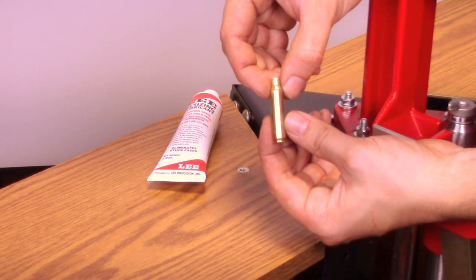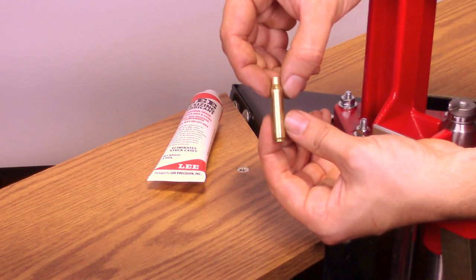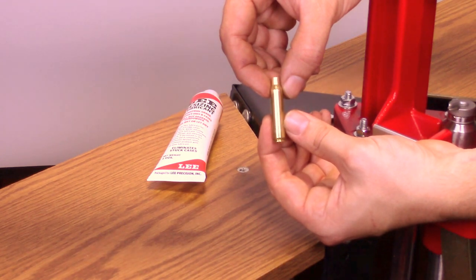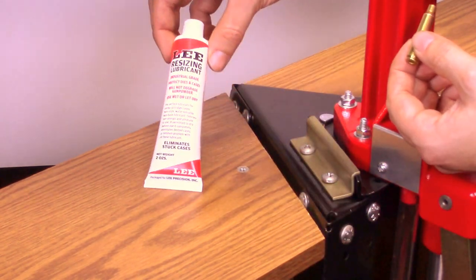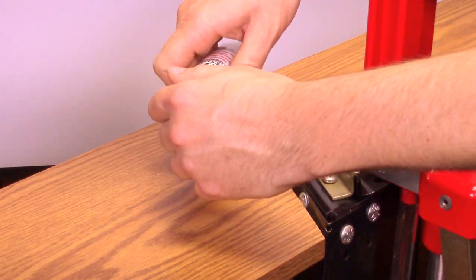Properly lubricating and sizing a bottleneck case. Using Lee Case Resizing Lube, product number 90006, apply a thin film onto the case.